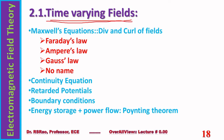Time varying fields are fields surrounding conductors carrying time varying currents, that is alternating currents. In these fields, there exists an electric field and there exists a magnetic field. Therefore, time varying fields are a combination — an interconnection — of electric field and magnetic field. The starting point of time varying fields is Maxwell's equations.